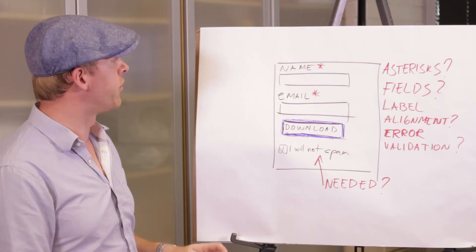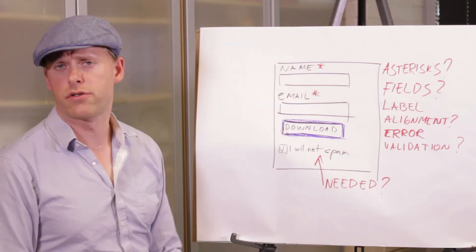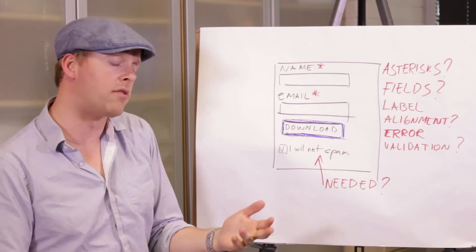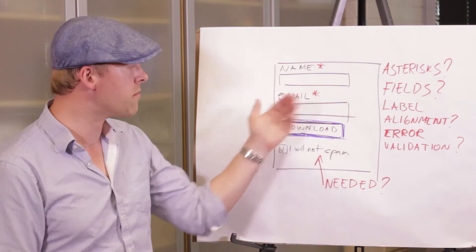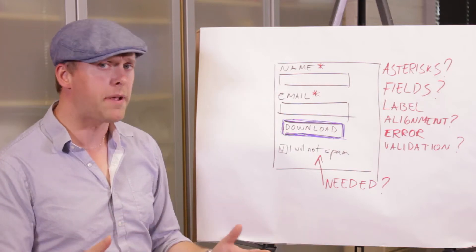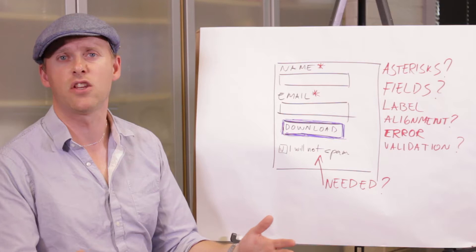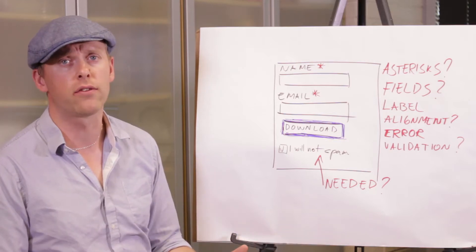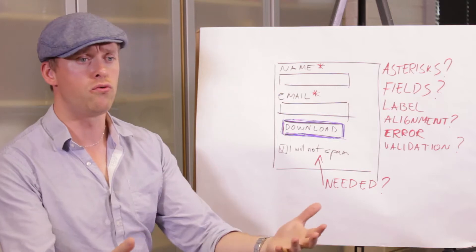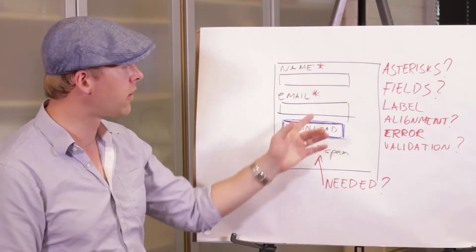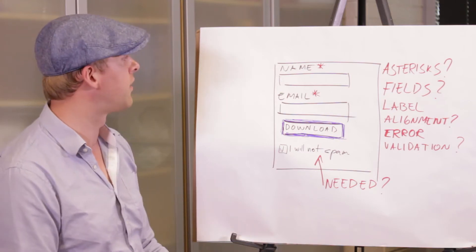So first things first, you have form fields and asterisks. Do you need them if it's a mandatory field? Actually, if you test removing asterisks, typically you'll see that people volunteer all the information anyway and you get higher completion rates. It's a principle of autonomy. People like to decide what they do. They don't like to be told. So asterisks, I would say you don't need them but you can test them.